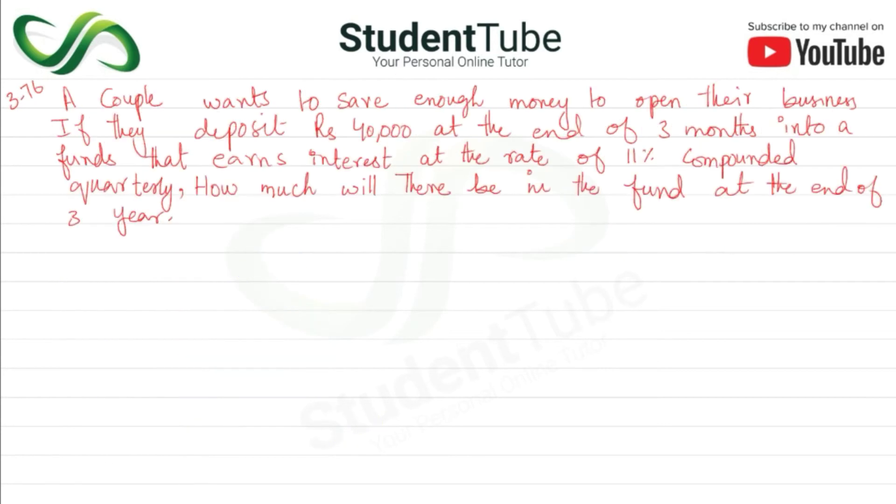Question 3.76: A couple wants to save enough money to open their business. If they deposit rupees 40,000 at the end of 3 months into a fund that earns interest at the rate of 11% compounded quarterly, how much will there be in the fund at the end of 3 years?